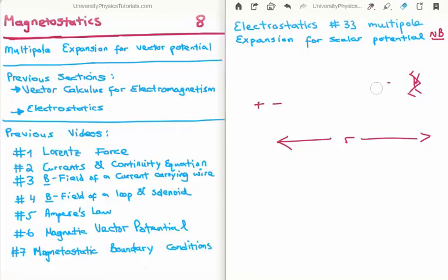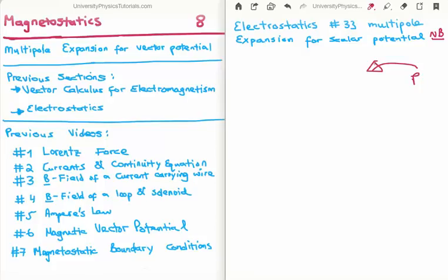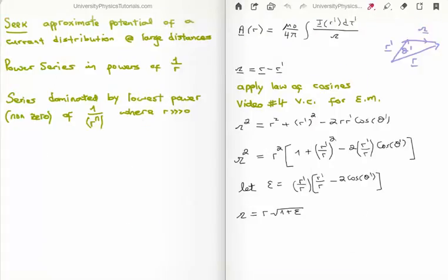That allowed us to introduce the electric dipole moment P. The dipole moment P allowed us to analyse what the electric potential was doing in an easier manner, and of course V allows us to calculate the electric field more easily. We're going to do something similar with the magnetic field.